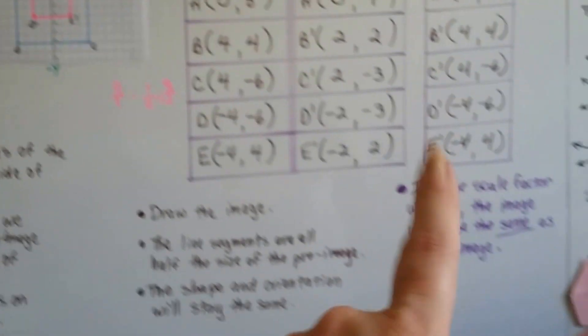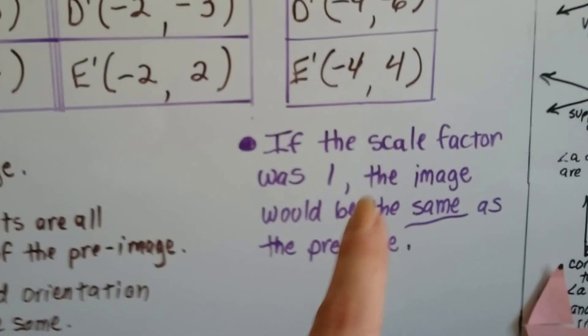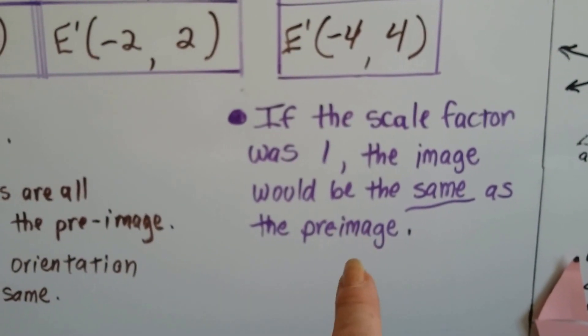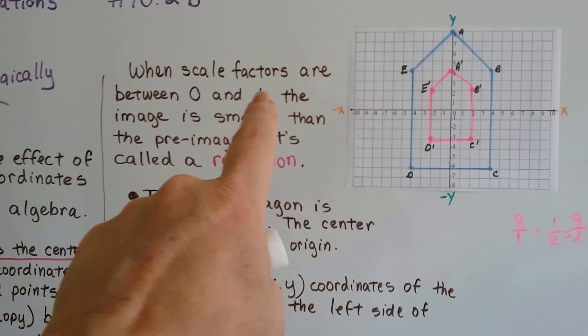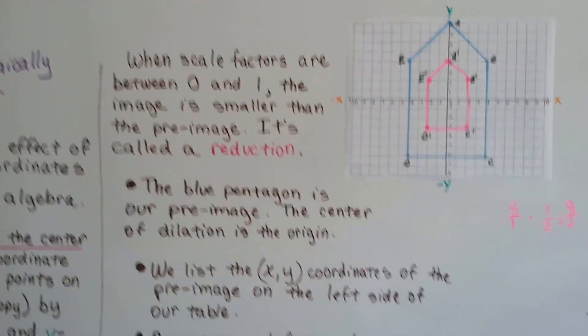So, if the scale factor was 1, the image would be the same as the pre-image. In order for it to reduce, it has to be less than 1. It's got to be smaller than 1.